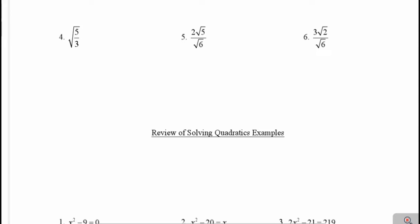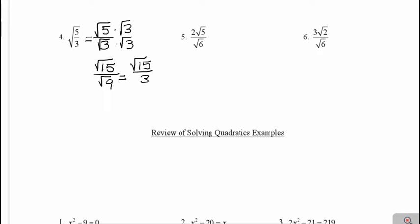A few more dividing radicals examples. In example 4, I have again the square root of a fraction, and because I can't simplify that fraction 5 thirds, that would be the same thing as breaking it up into two square roots. So that would be the same thing as the square root of 5 over the square root of 3. To get rid of the square root in the denominator, we're going to multiply both the top and the bottom by the square root of 3. So on top I would get the square root of 15, and on the bottom I would get the square root of 9. I know I can simplify the square root of 9 to just 3, and I can't simplify it any further, so that would be my final answer.